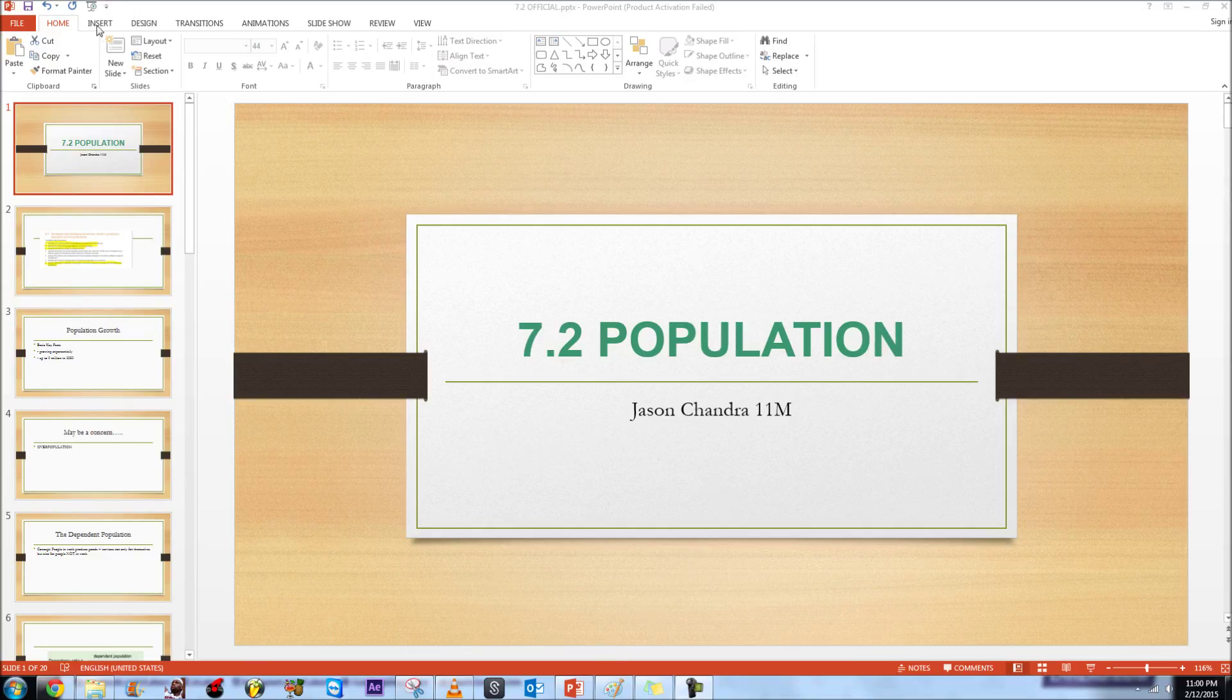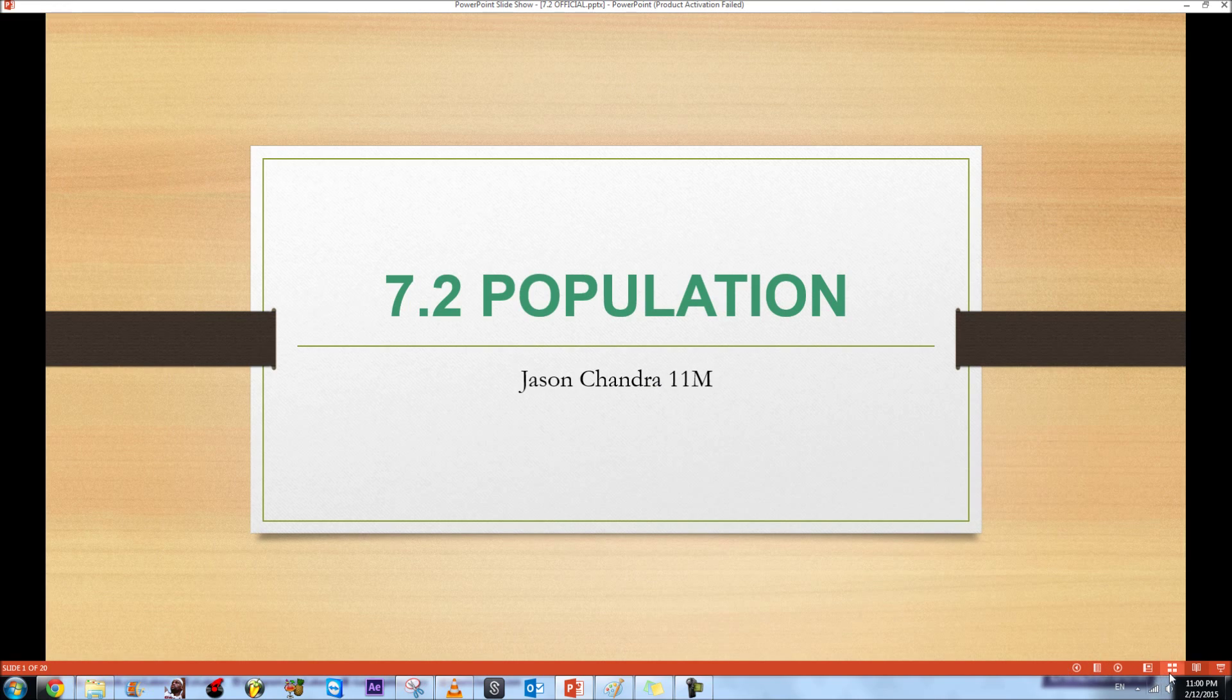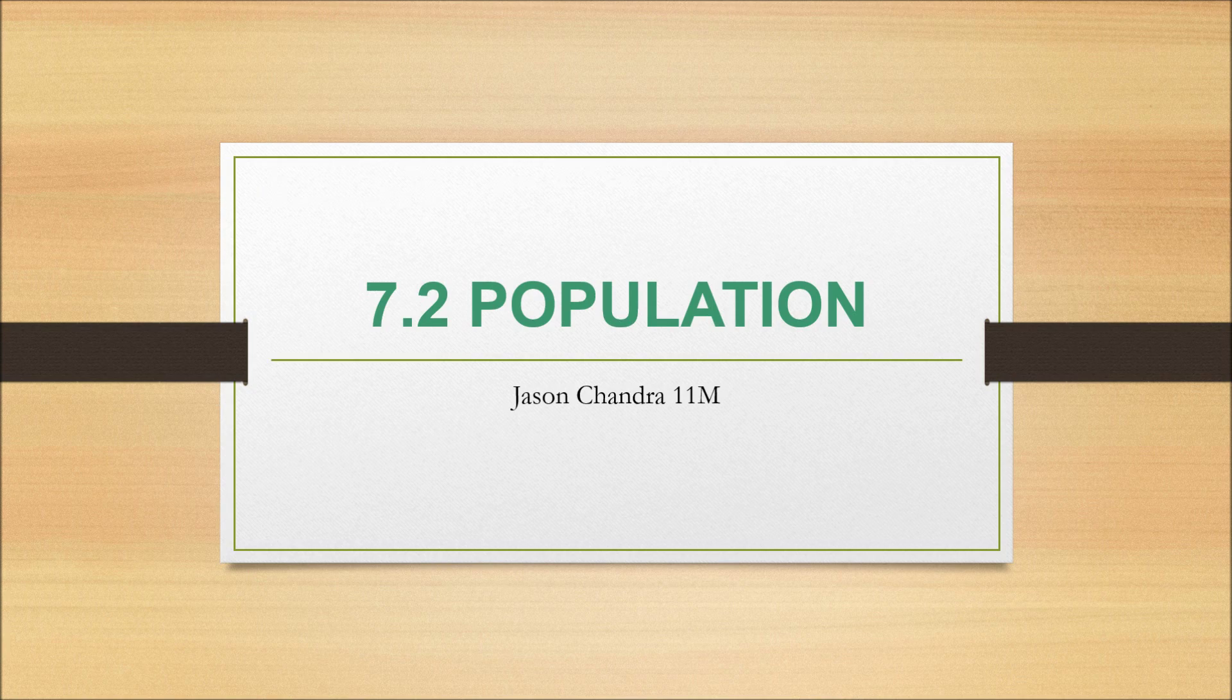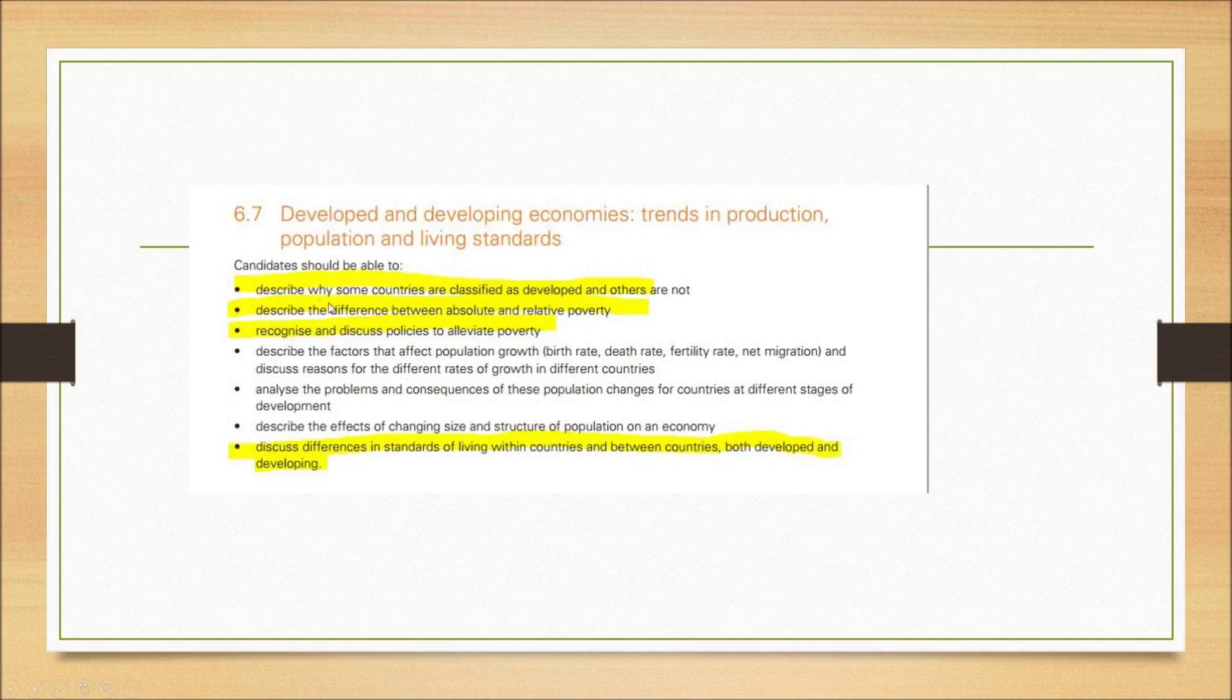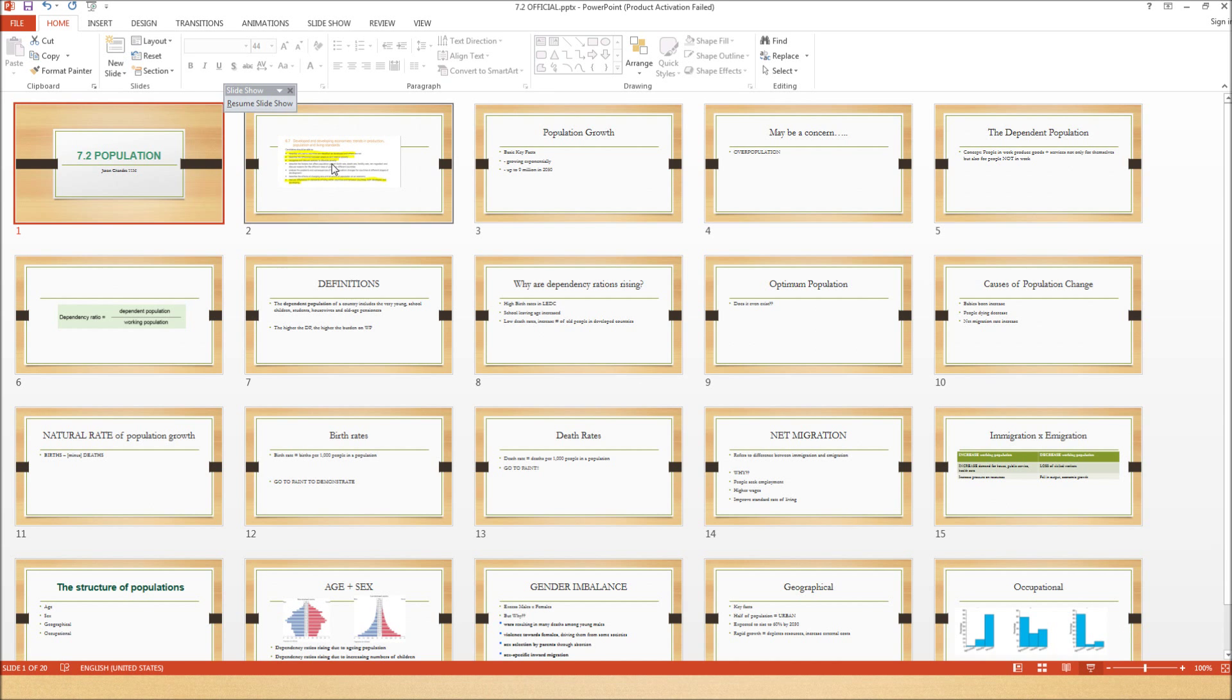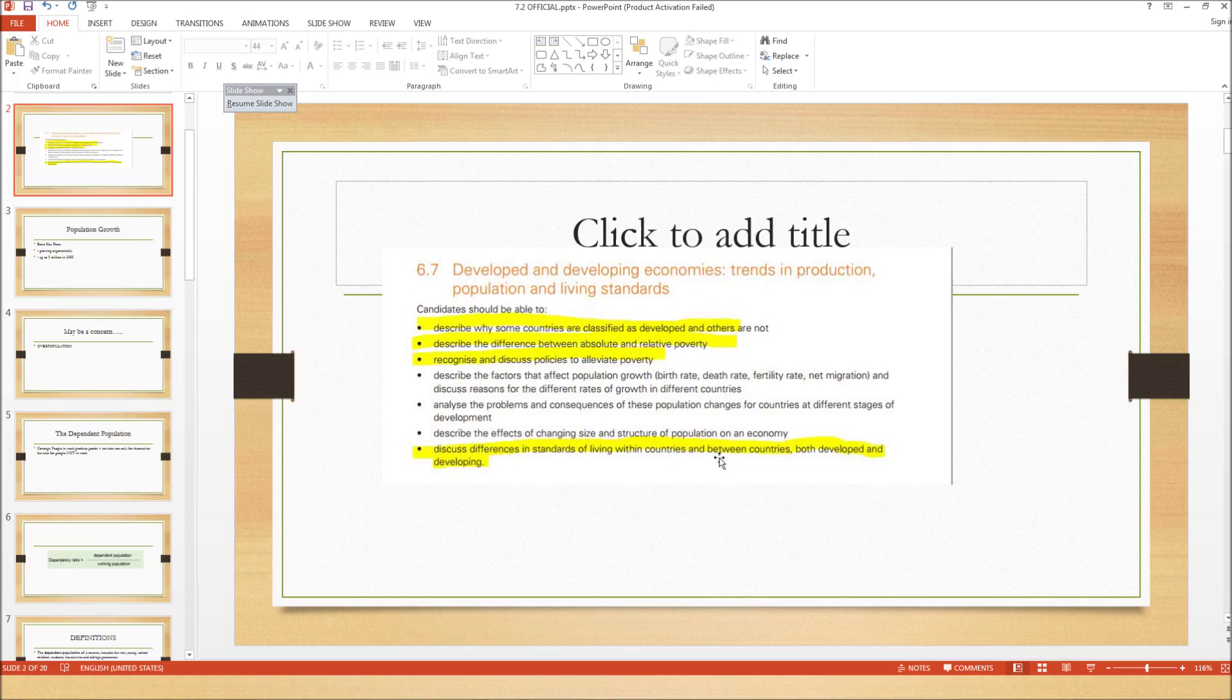Hello everyone and welcome to the second part of the chapter 7 revision guide. This is 7.2 population. We have done 7.1 which is on poverty and the developed and not developed countries. So let's get started with 7.2 population. As we can see, the highlighted parts are what we've already done and we haven't described the factors that affect population growth, discuss reasons, analyze the problems and consequences, and describe the effects of changing size and structure of population in an economy.